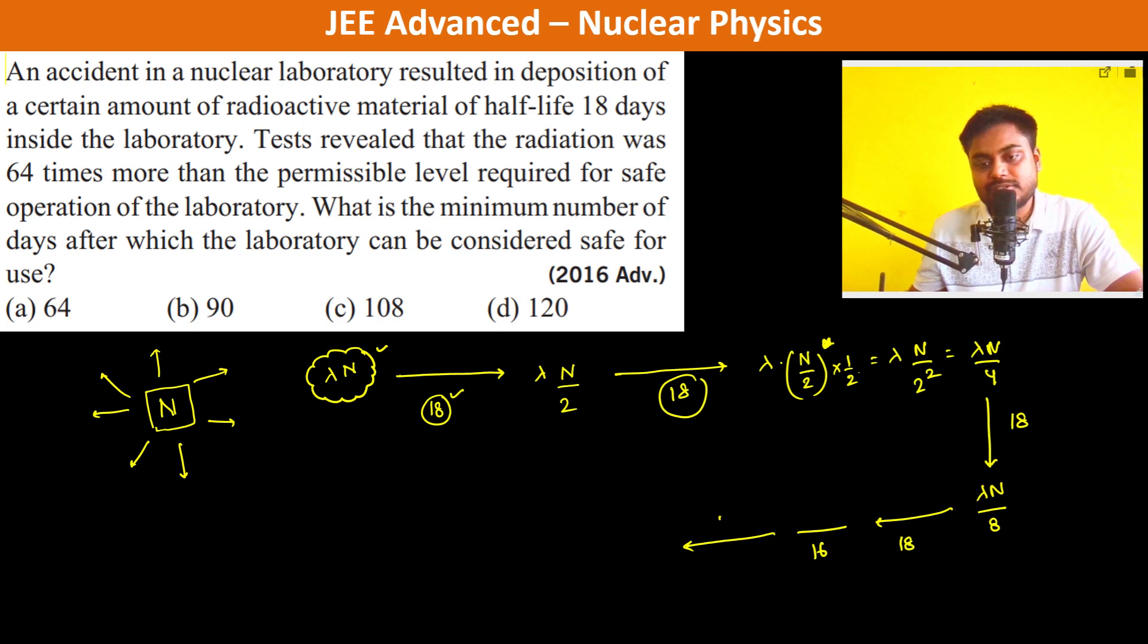Again, 18 days, it is going to be lambda N by 32. And again, 18 days, it is going to be lambda N by 64. That's 1, 2, 3, 4, 5, and 6. So therefore, 6 into 18, that is 108 days.